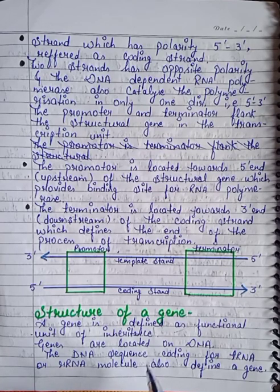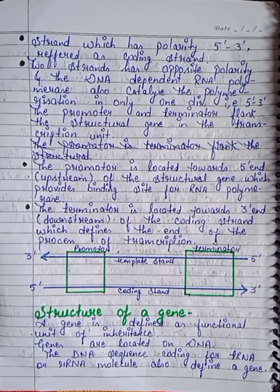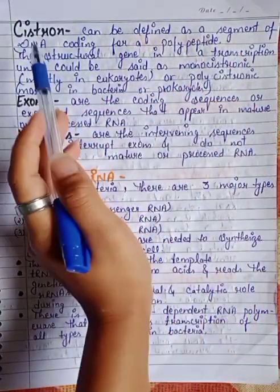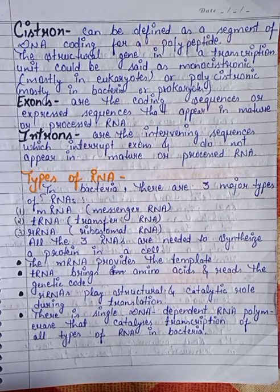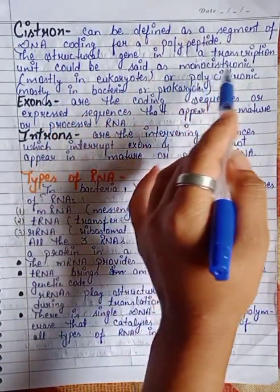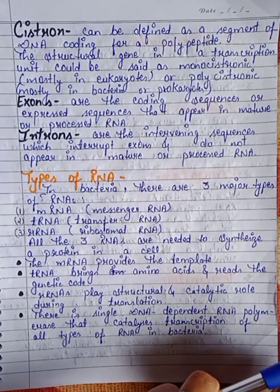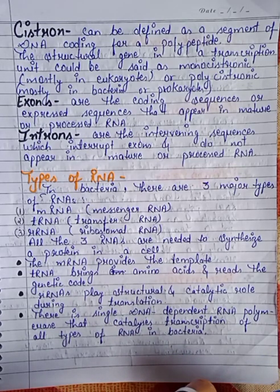A gene is defined as a functional unit of inheritance. Genes are located on DNA. The DNA sequence coding for tRNA and rRNA molecules is also defined as a gene. A cistron can be defined as a segment of DNA coding for a polypeptide. The structural gene in a transcription unit can be monocystronic, mostly in eukaryotes, or polycystronic, mostly in bacteria and prokaryotes.